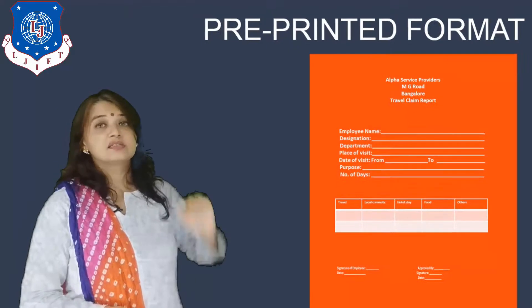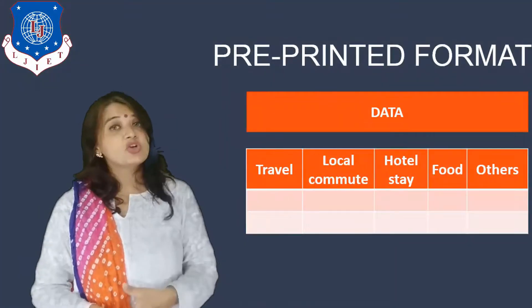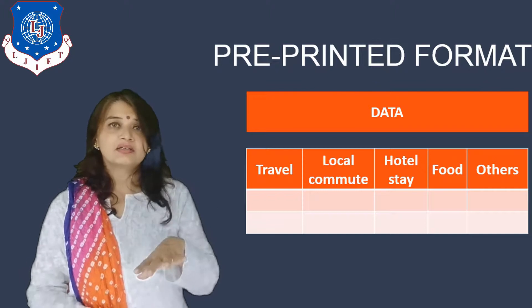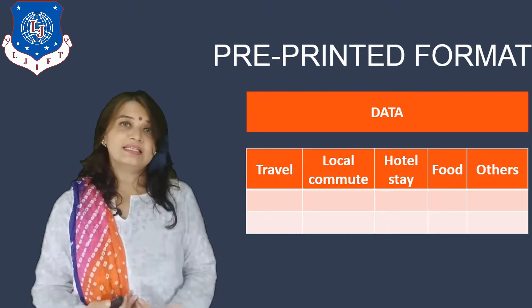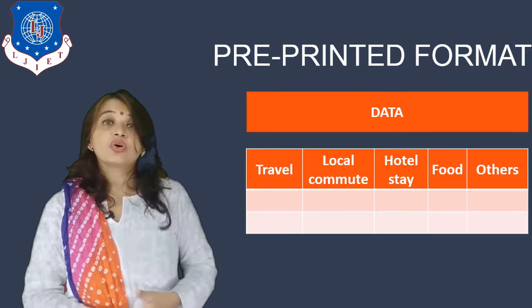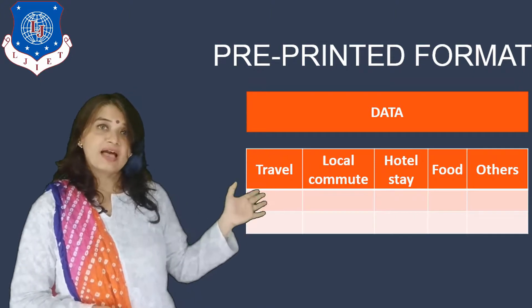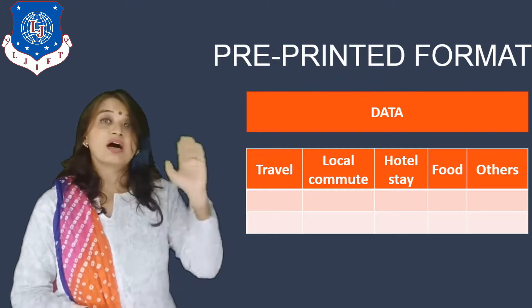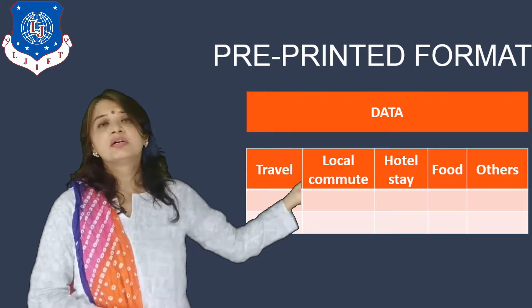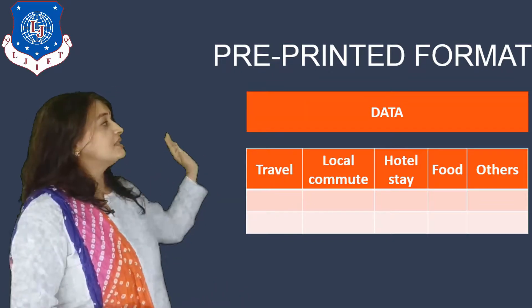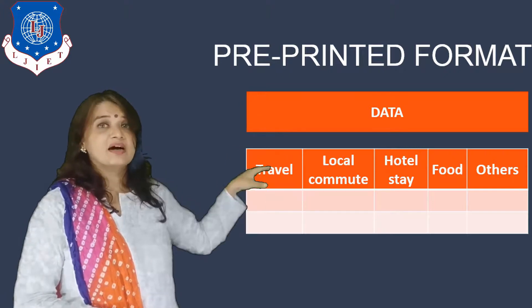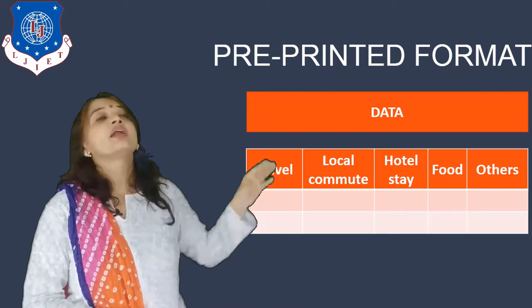Moving on to the next element, which is in a table form. It is not that in all pre-printed formats there is a table form, but here a table form is used because certain data can be put into a table and looked at very easily, making reading such reports an easy task. In the data of our travel claim report we have the travel amount, local commute, hotel stay, food, and any other expenses. This gives the total amount the organization needs to reimburse. Data can be presented in a table format or a list format.